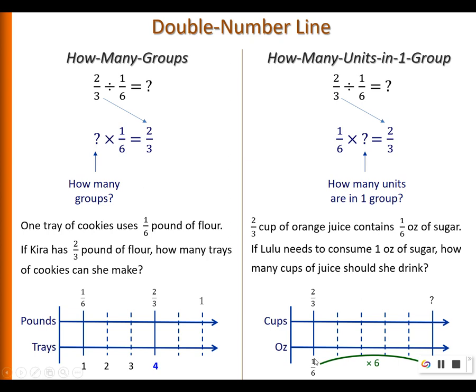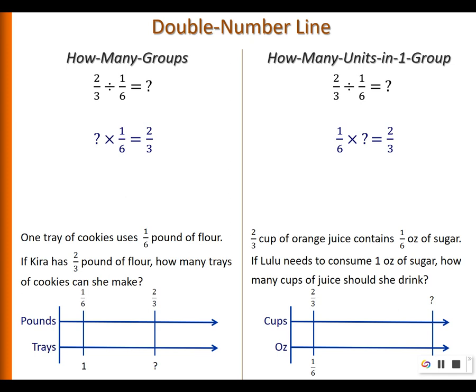Since 1/6 ounce corresponds to 2/3 cup, to get one full ounce I multiply 1/6 by 6. In the same way, I multiply 2/3 by 6 to get the answer. So the answer is 2/3 times 6, which again equals four.